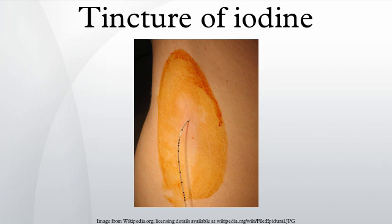USP tincture of iodine is defined in the US National Formulary as containing, in each 100 milliliters, 1.8 to 2.2 grams of elemental iodine and 2.1 to 2.6 grams of sodium iodide. Alcohol is 50 milliliters and the balance is purified water. This 2% free iodine solution provides about 1 mg of free iodine per drop.